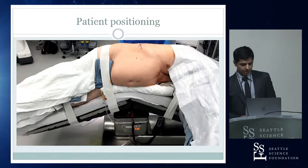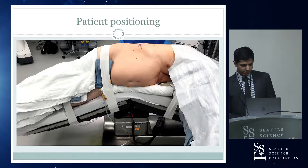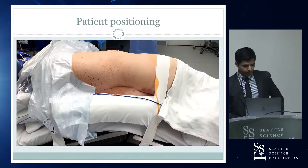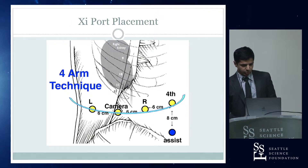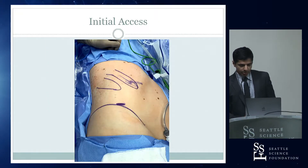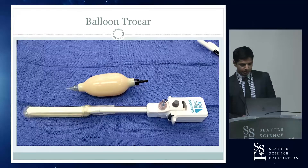Patient positioning: we do a full flank position. We do what we call soft positioning with pillows and blankets, and we place the umbilicus at the break and fully flex the bed. This gives us as much space as possible between the iliac crest and the 12th rib. For the XI port placement, we use a forearm technique. The XI arms are pretty forgiving, so they allow us to place these ports fairly close to each other — in a kind of curvilinear fashion, placing all four arms about six centimeters apart. Our first incision is roughly in the mid-axillary line, just above the iliac crest. You can see the 12th and 11th ribs also marked out there.